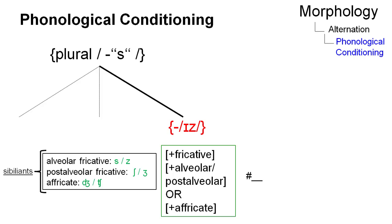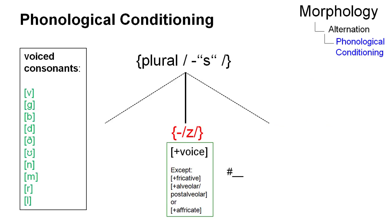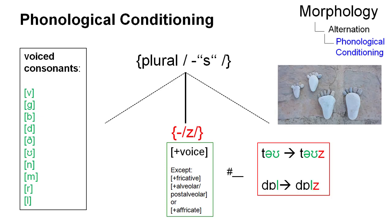If the base form ends with an alveolar or post-alveolar fricative or with an affricate, we add the syllabic allomorph /ɪz/, for example in 'clauses' and 'bridges'. If the preceding sound is voiced, the voiced /z/ is selected, like in 'toes' or 'dolls'.